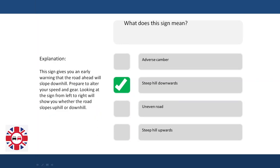Explanation: This sign gives you an early warning that the road ahead will slope downhill. Prepare to alter your speed and gear. Looking at the sign from left to right will show you whether the road slopes uphill or downhill.